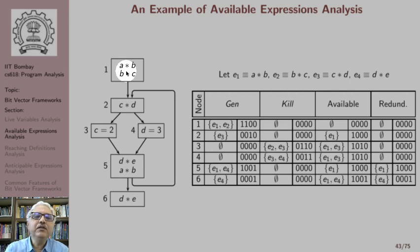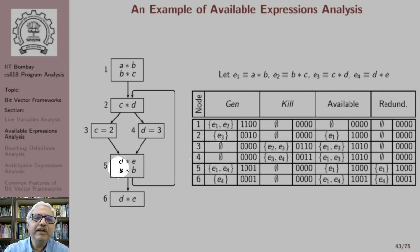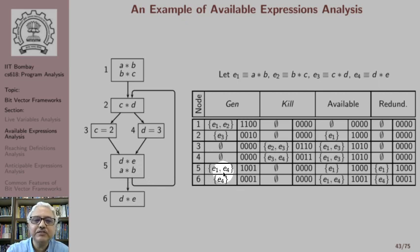In basic block 1, expressions a*b and b*c have their availability generated, so e1 and e2 are generated — the first two bits are 1 and bits 3 and 4 are 0. In basic block 2, expression c*d is generated, so the third bit is 1 and the rest are 0. In basic blocks 3 and 4, there is no expression computation, so the GEN set is empty and all bits are 0. In basic block 5, d*e (e4) and a*b (e1) are computed, so bits 1 and 4 are 1. In basic block 6, e4 is generated so that bit is 1.